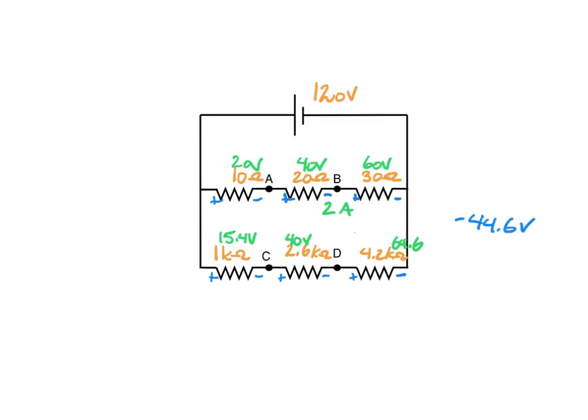Going the other route, I should get the same answer. From B to C this way, I pick up 60 volts, drop off 64.6 volts, and drop off 40 volts, ending up with roughly negative 44.6 volts.